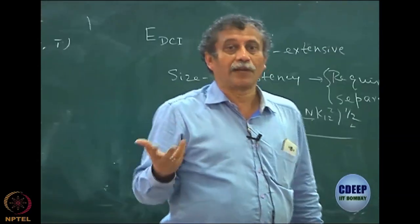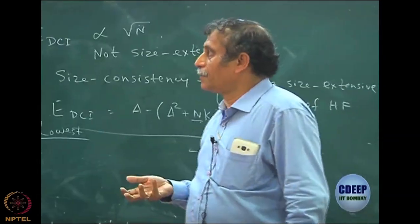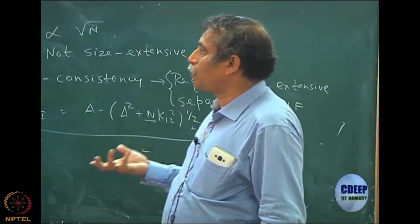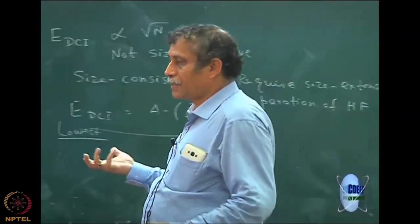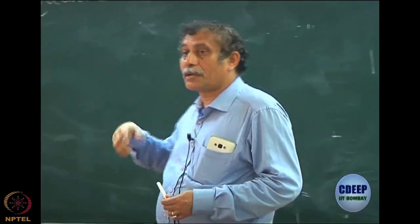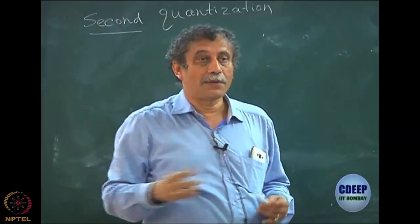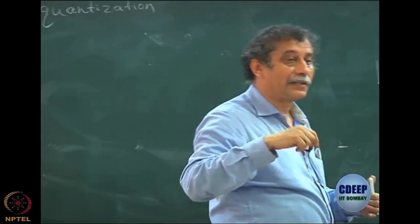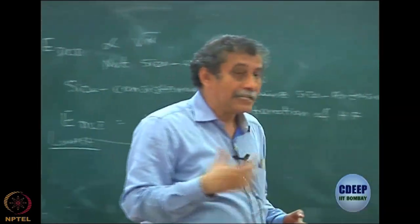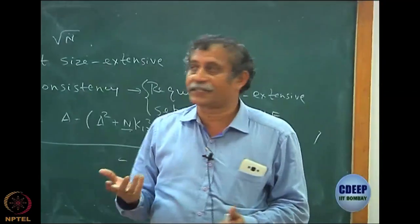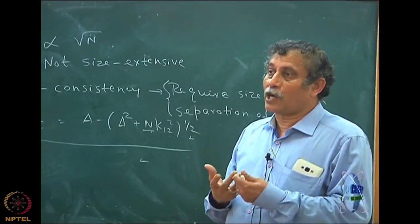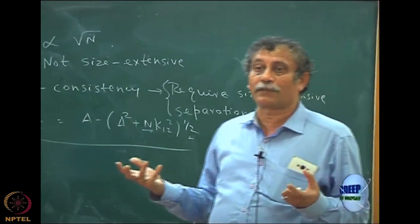Second quantization is a language, but the language makes a simplification. If you look at the Hamiltonian that we write, it is always written in terms of the number of electrons — a sum over h(i), a sum over 1/r(ij). In the second quantization, when we write the same Hamiltonian, we will not have explicit dependence on the number of electrons.